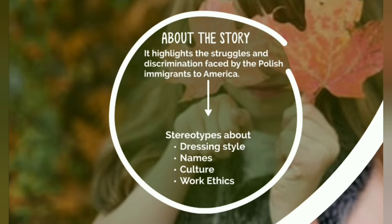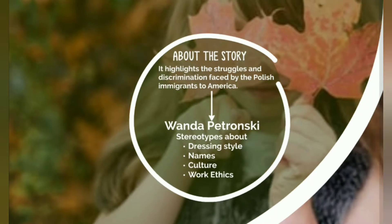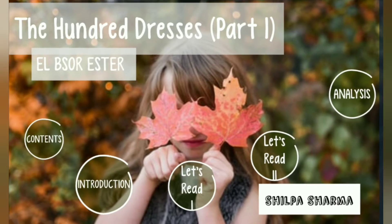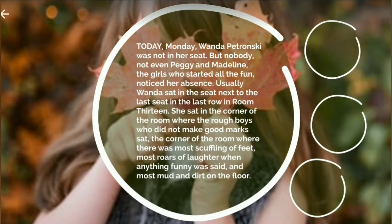The main character is a little girl named Wanda Petronski. Her classmates think her dressing style is bad, her name is weird, and her culture is different from theirs — so she is discriminated against. This is the major theme of the story that we'll read about.